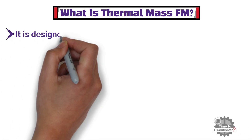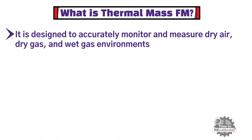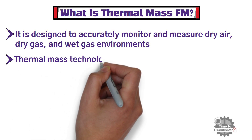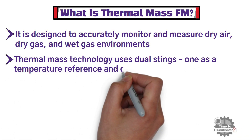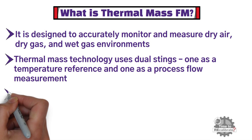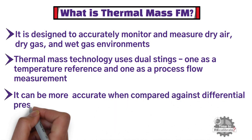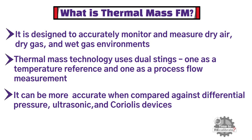Thermal mass flow meters are designed to accurately monitor and measure dry air, dry gas, and wet gas environments. Thermal mass technology uses dual stings — one as a temperature reference, and one as a process flow measurement. These devices introduce heat into the flow stream, using the concept that stronger flows cause a greater cooling effect. Thermal mass technology can be more reliably accurate when compared against differential pressure, ultrasonic, and Coriolis devices, and it can be much more cost effective in purchase, installation, or maintenance costs.